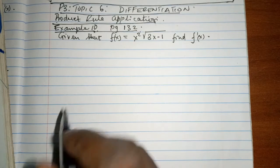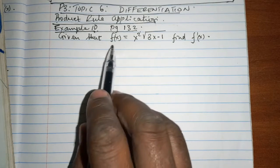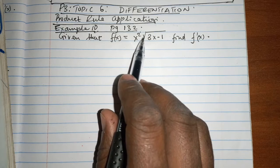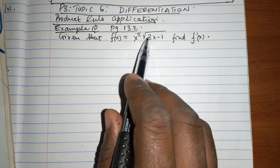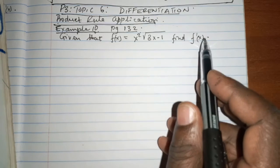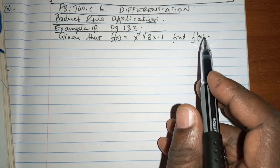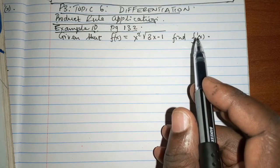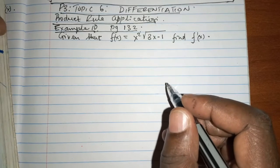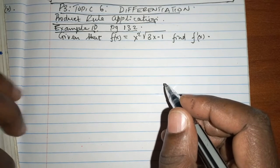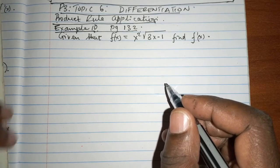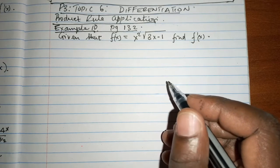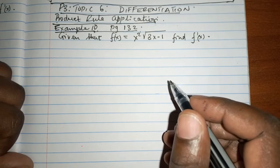We are told that given f(x) = x² multiplied by the square root of (3x - 1), find the derivative of the function. As you can see, this function is a product of two parts.